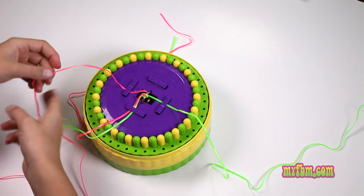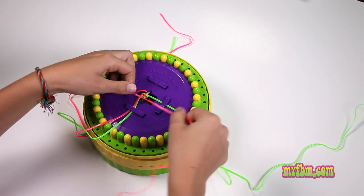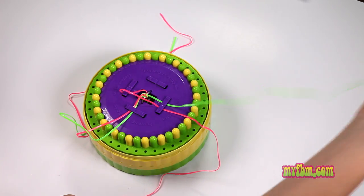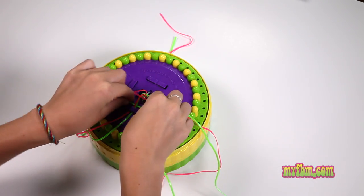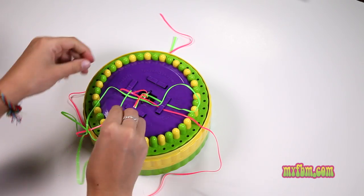To begin take the number one and fold it over to the number six placeholder. Take your number five green lace, go under your core laces for number eight and then go through the loop you created for number one.